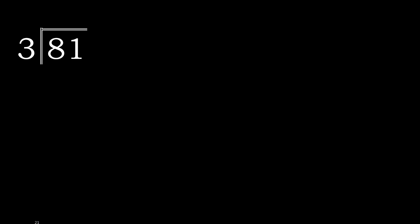81 divided by 3. Looking at 8 first — 8 is not less, therefore 3 multiply by which number is nearest to 8 but not greater. 3 multiply by 3 is 9, 9 is greater.